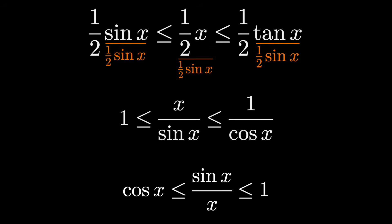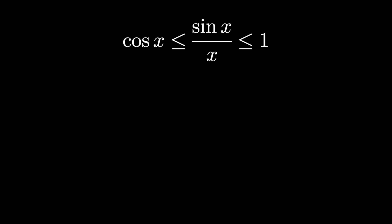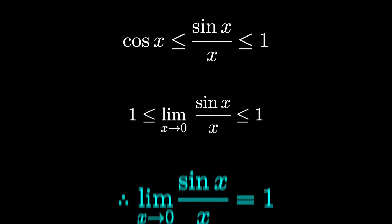Here's the fun part. We apply the very famous squeeze theorem. We'll take the limit as X approaches 0. On the right, the limit of a constant is that constant. On the left, we just need to substitute 0 into cosine. Cosine of 0 is 1. And what this tells us is that the limit as X approaches 0 of sin X over X is greater than or equal to, simultaneously less than or equal to, 1. By the squeeze theorem, this limit must be 1.